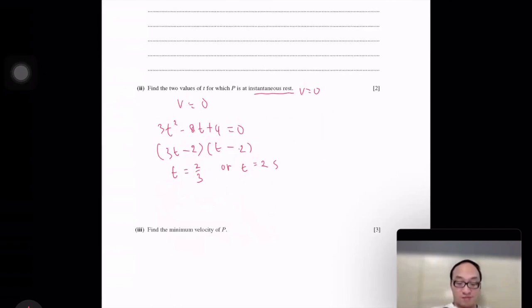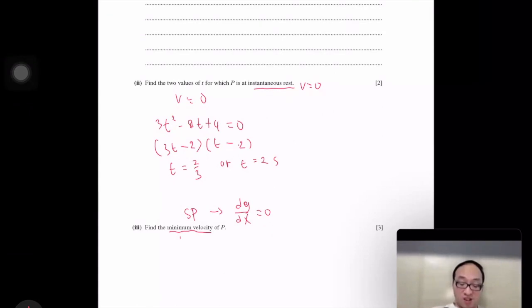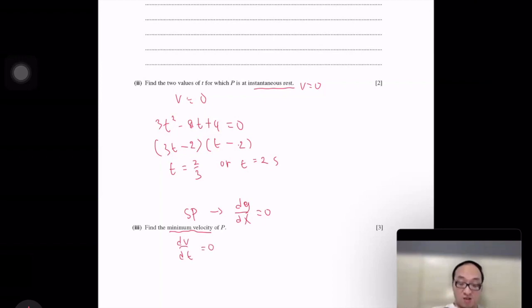Find the minimum velocity of P. Minimum velocity means stationary point. To find the stationary point, the first derivative is equals to zero. So that means the first derivative of the velocity is equals to zero. So we derive the velocity. It becomes 6t minus 8 equals zero. So t is 8 over 6 or 4 over 3.